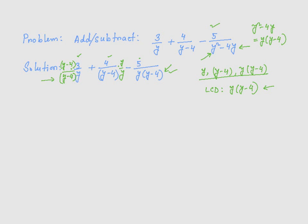Now we just need to simplify it. So 3 times y is 3y, and then 3 times negative 4 is negative 12, divided by y times (y minus 4). Then plus 4 times y is 4y, divided by y times (y minus 4). Then minus 5 over y times (y minus 4).